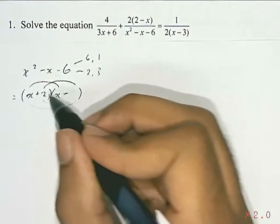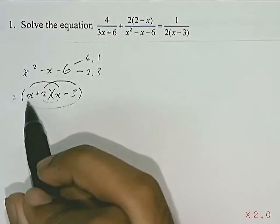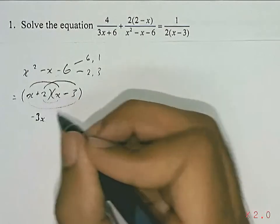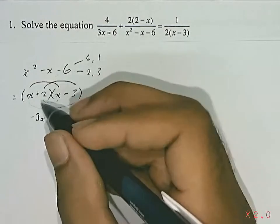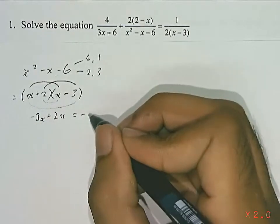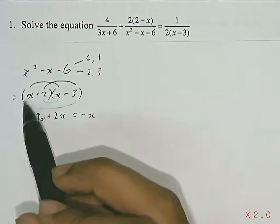If I place 2 here and 3 here, multiplying these two, we get negative 3x. And multiplying these two, we get 2x. So we add them up, that will give us negative x, which is exactly what we want. So this is the answer.